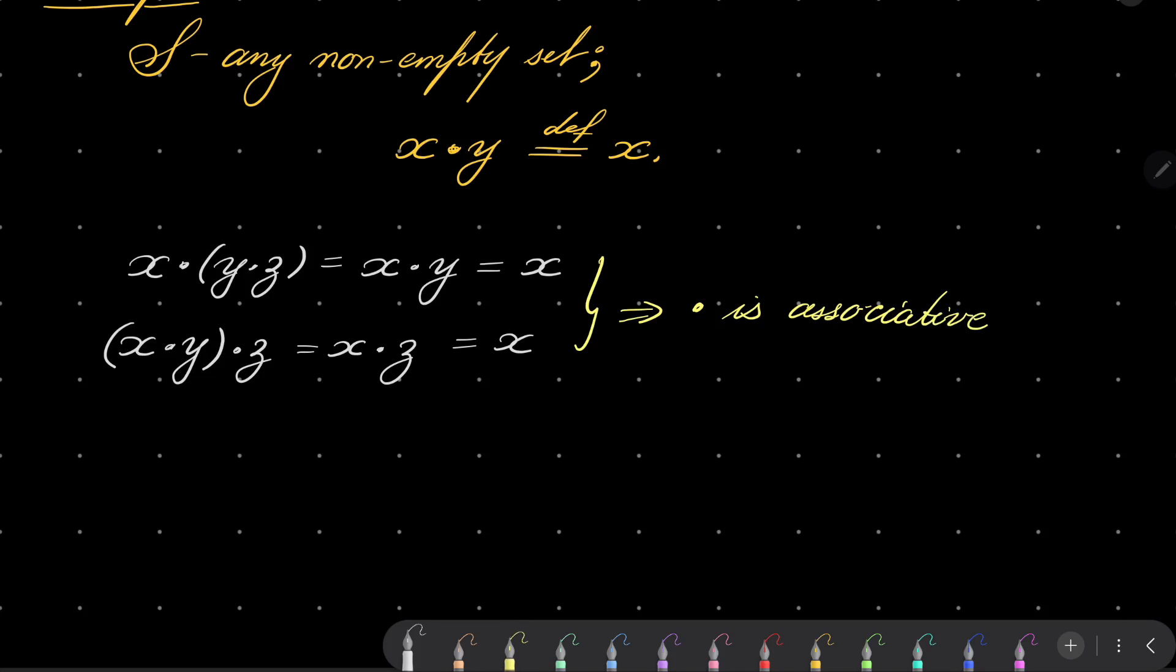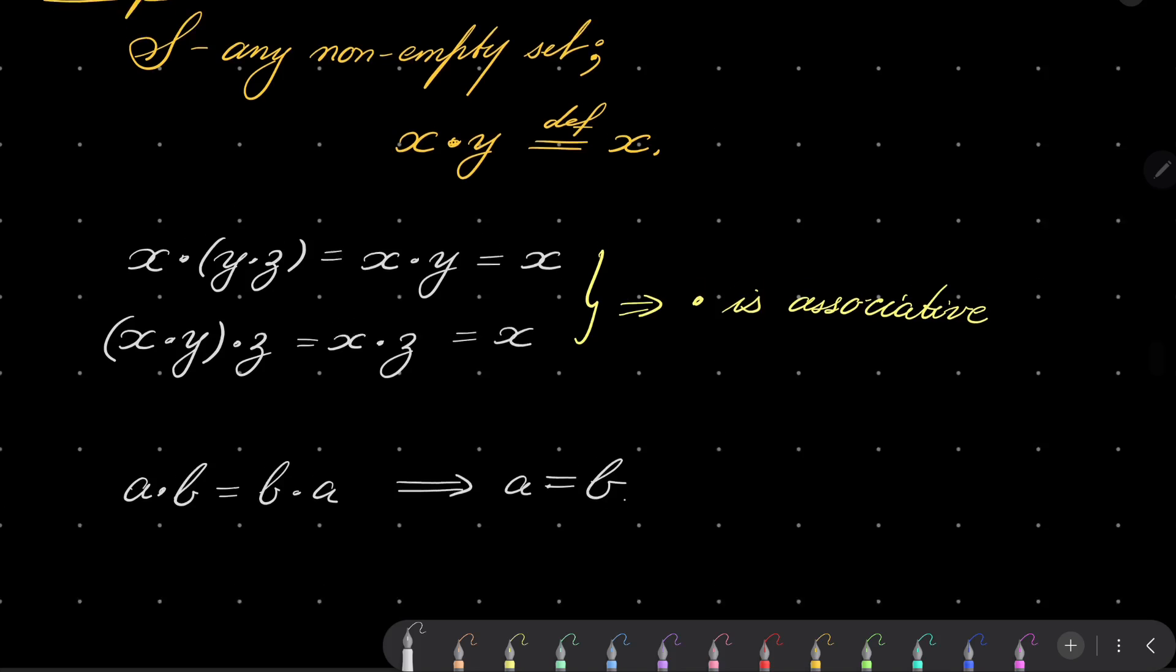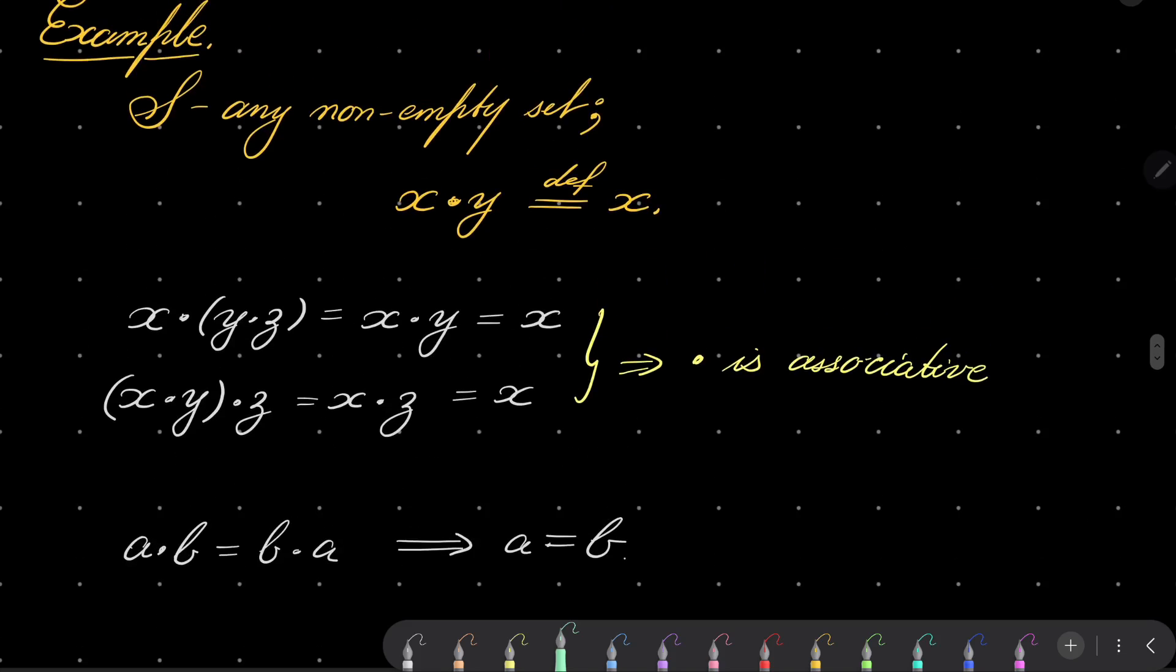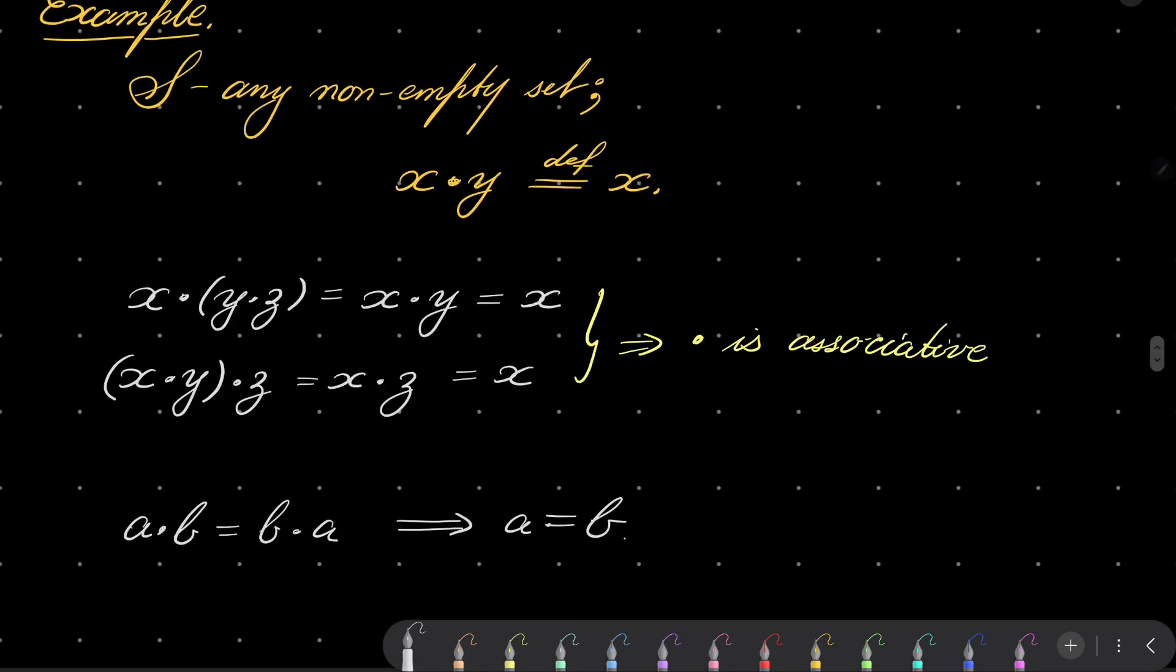And moreover, if a·b equals b·a, well, a·b equals a, and b·a equals b. So our second assumption is satisfied, so we have given our example. So it was our example of our semigroup. And that closes our problem.